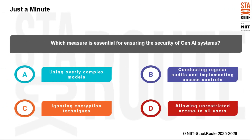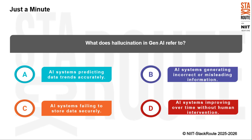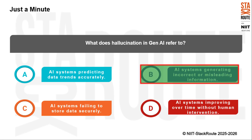Let's check your understanding based on the concepts covered in the video. The first question: which measure is essential for ensuring the security of Gen AI systems? The correct answer is option B — conducting regular audits and implementing access controls. The next question: what does hallucination in Gen AI refer to? The correct answer is option B — AI systems generating incorrect or misleading information.